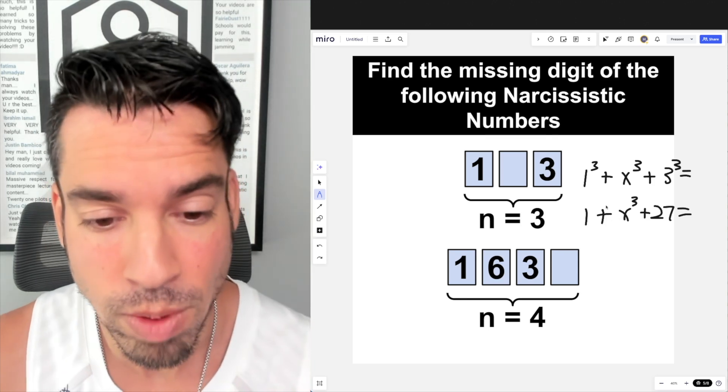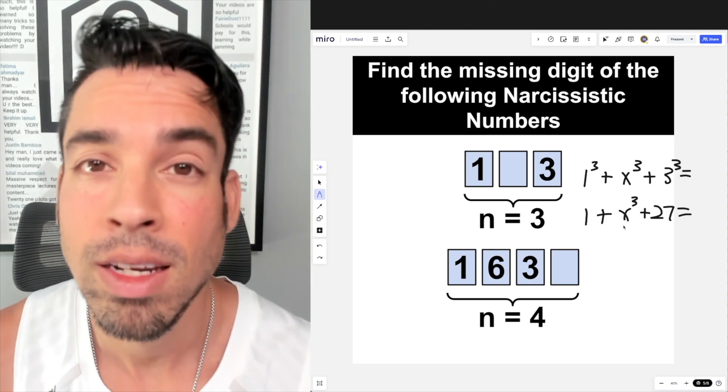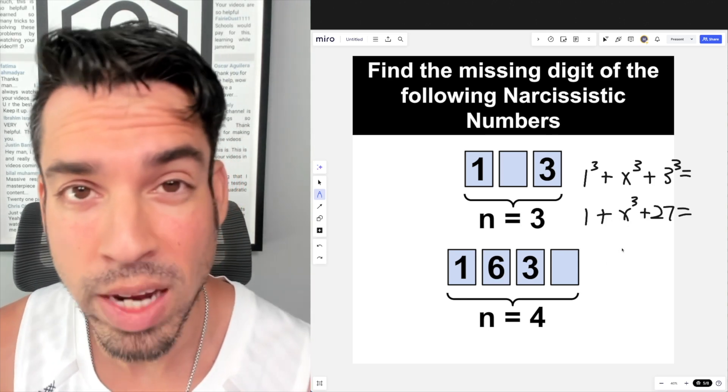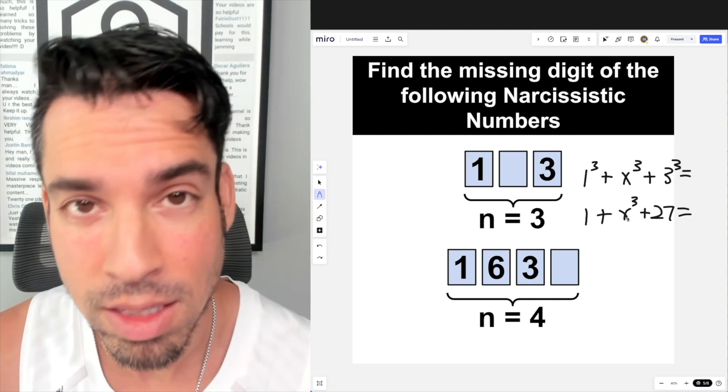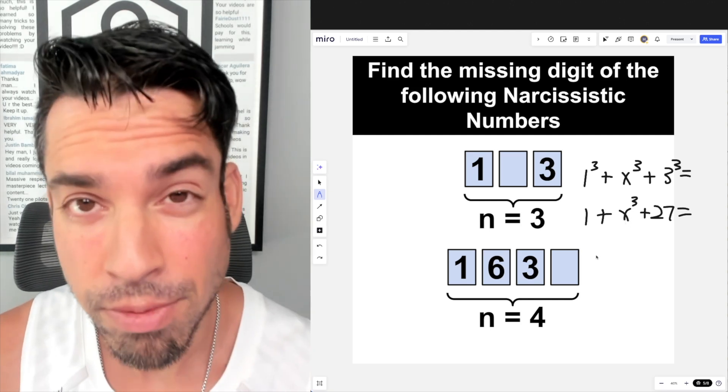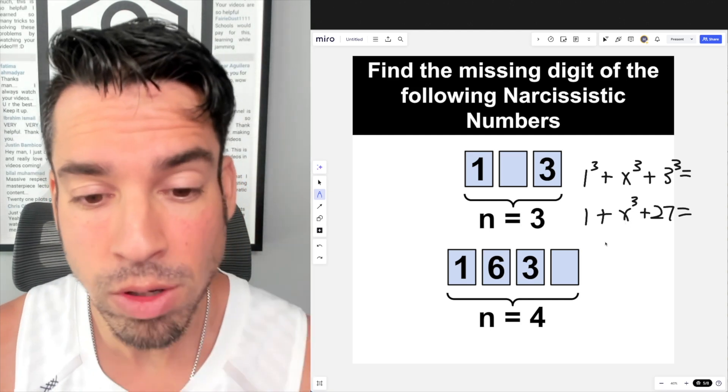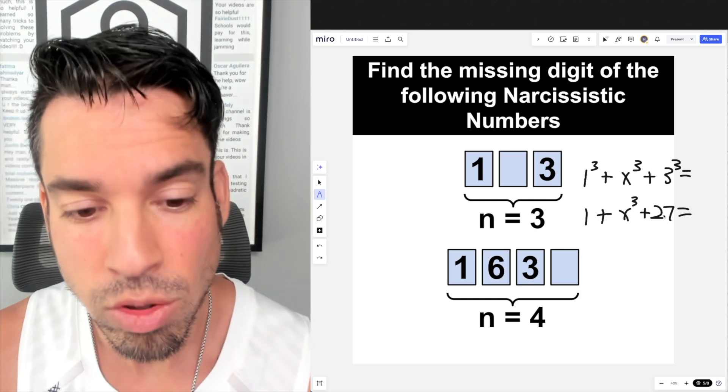This missing digit has to get us to a hundred but not get us past a hundred. For example, if we had 9 to the third power, that'd be way too big—9 times 9 times 9 is 729. If we dial it back to 4, that's going to be a little bit too small. 4³ is only 64, so that's not going to bridge the gap.